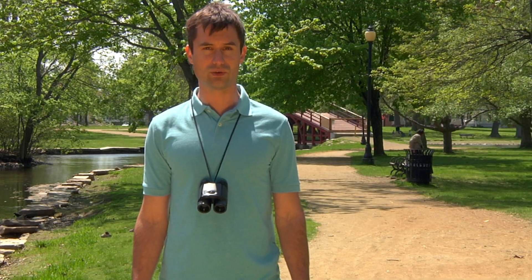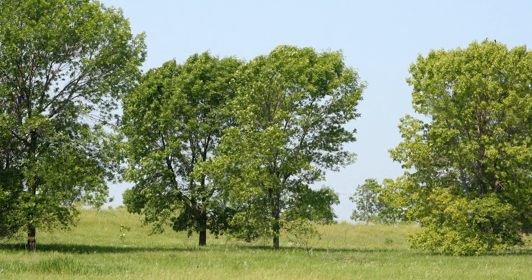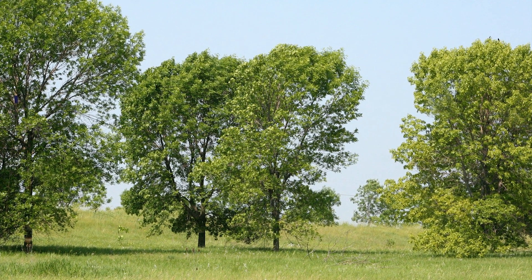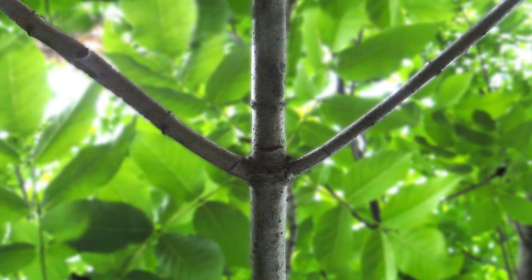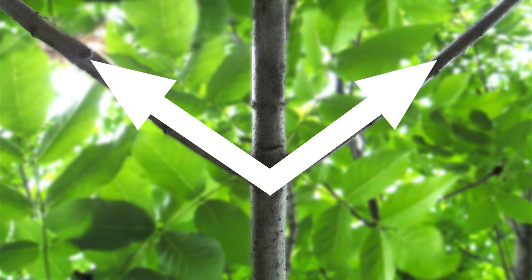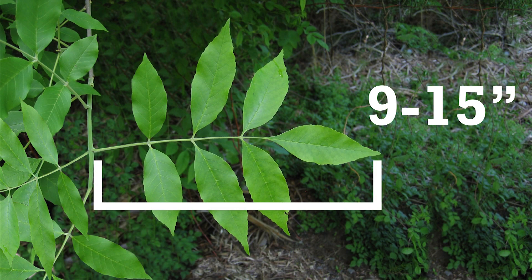It attacks all species of North American ash trees. Ash are medium to tall deciduous trees and can be identified by their opposite branching and 9 to 15 inch long compound leaves.